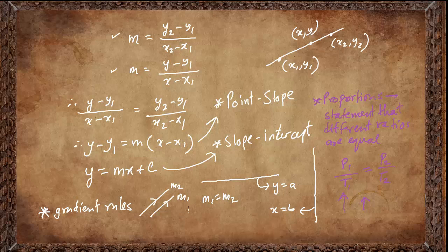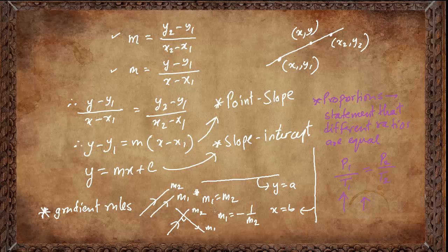On the other hand, when two lines are perpendicular to each other, one gradient is going to be positive and the other negative. If this one is m2 and this one is m1, we say one gradient is not only the negative of the other — it is also the reciprocal of the other. These two rules are the most common rules for gradients of a line.